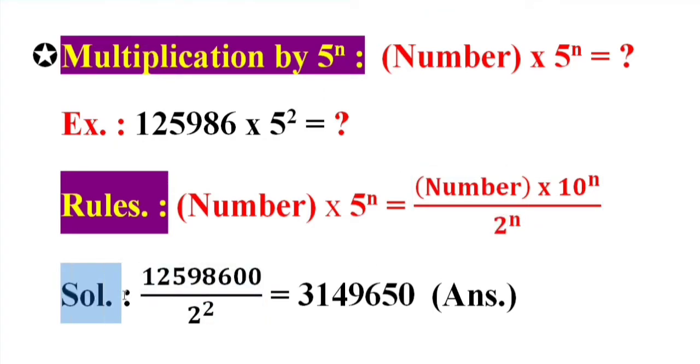Solution: 125986 double 0 by 2 square equal 3149650. Answer.